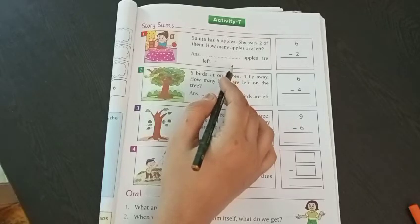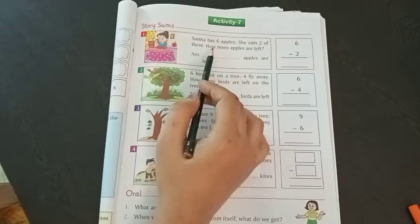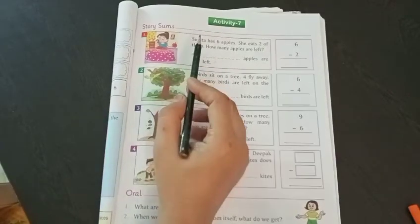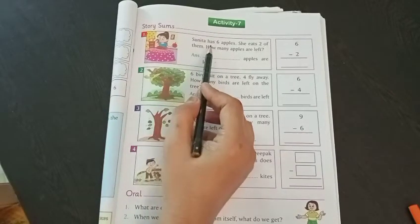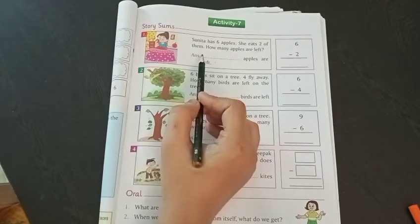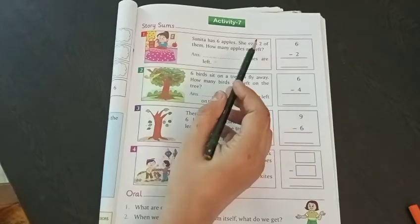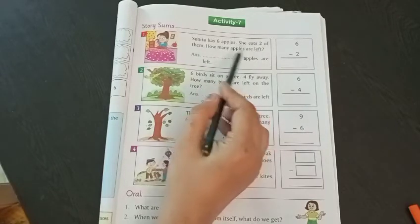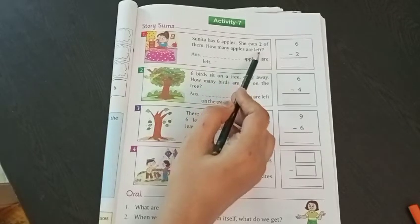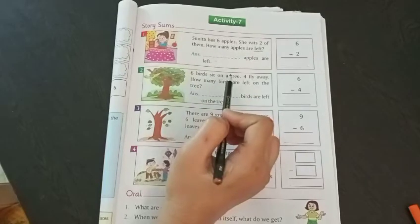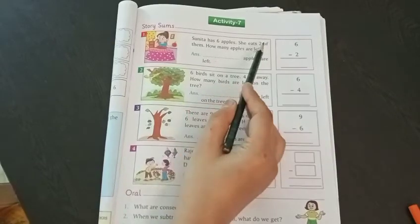This is a very shortcut method and it will not help you in every problem. For example, I am reading this sum, page number 49 of your book. The first sum given here is: Sunita has six apples. She eats two of them. How many apples are left? If you see the question, you will only see the keyword here. This left is a keyword, so you know this is a subtraction sum.